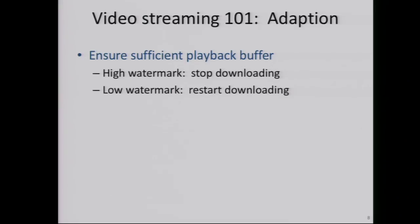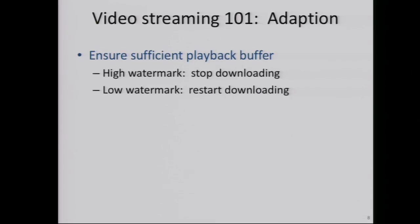At a high level, there's a fairly simple control plane protocol that allows us to switch between encoding types. We make sure we have some playback buffer, so we start downloading and keep downloading until we generally reach a high watermark. The high watermark gives us time to adapt, and also from an infrastructure perspective, you don't want to download an entire 500 megabyte or gigabyte movie if the person's going to switch after watching a minute or two. Once you hit the high watermark you'll stop, and once you drain to a low watermark, you'll restart the download.